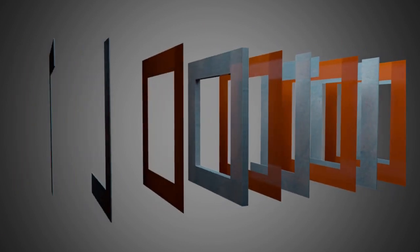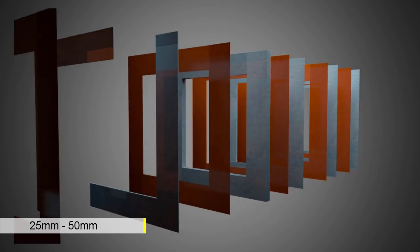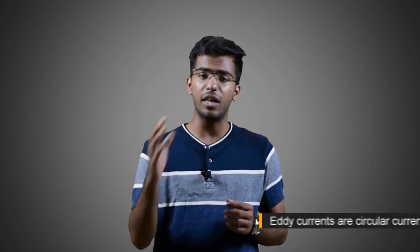It is made of thin laminated sheets stacked up one after the other to form a core. Each laminated sheet is about 25 millimeters to 50 millimeters thick. The purpose of this lamination is to reduce eddy current losses.